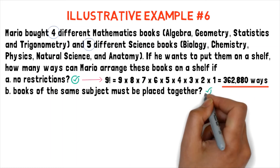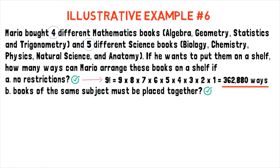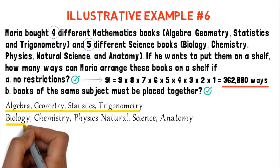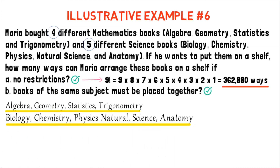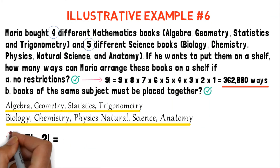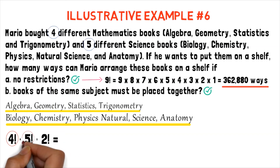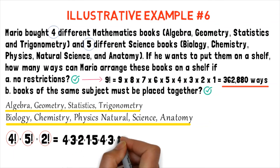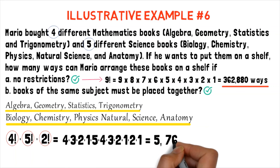For part B, where books of the same subject must be placed together: we count all math books as one group and all science books as one group. There are 4 math books that can be interchanged — 4 factorial — and 5 science books — 5 factorial. Since the math and science groups can also interchange their positions, that is 2 factorial. So we have 4 factorial times 5 factorial times 2 factorial, which gives us 5,760 ways.